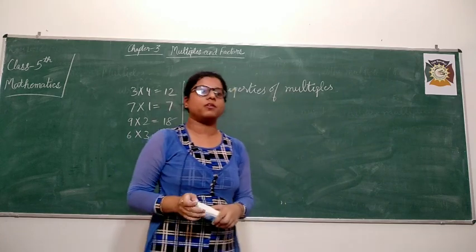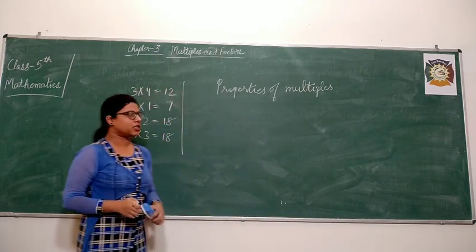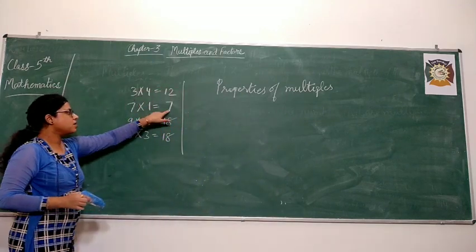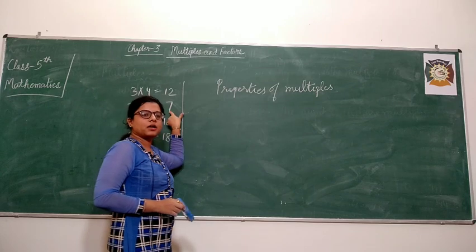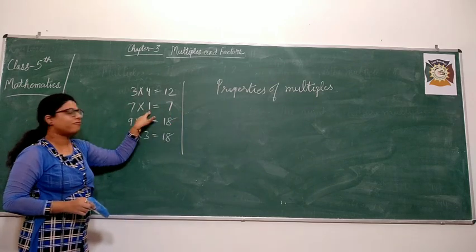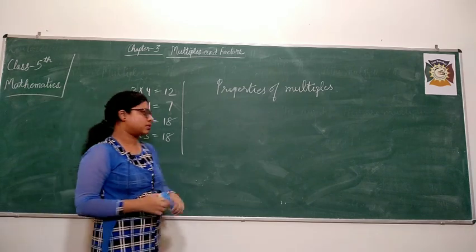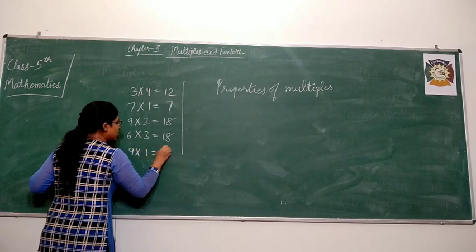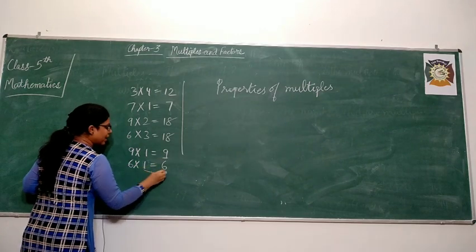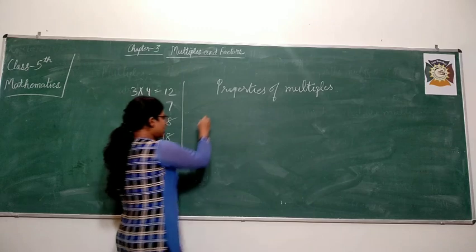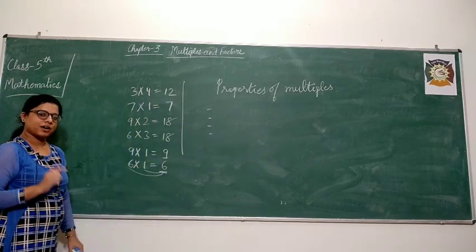There are a few properties of multiples. First: every number is a multiple of 1 and itself. For example, 7 is a multiple of 7 and 1 here. So the property says every number is a multiple of 1 and itself — 7 is a multiple of 1, and also a multiple of 7. This applies to all numbers: 9 into 1 is 9, 6 into 1 is 6.